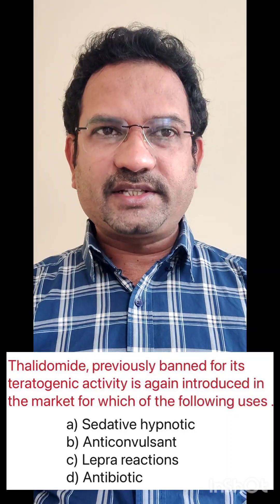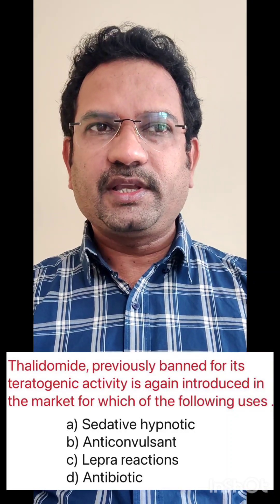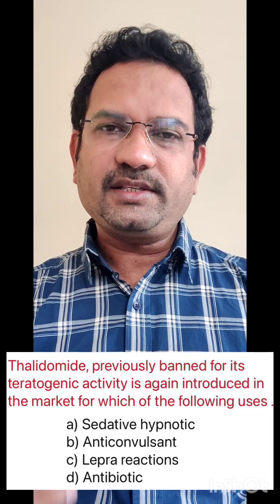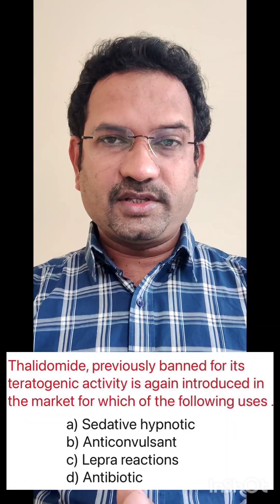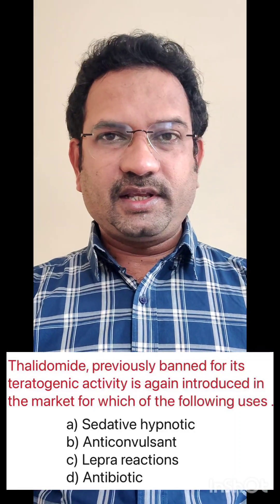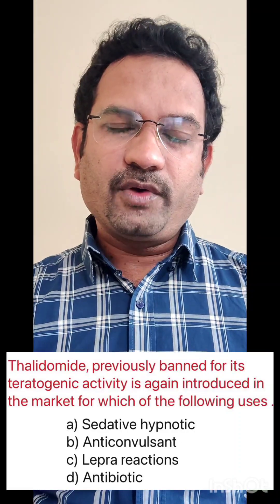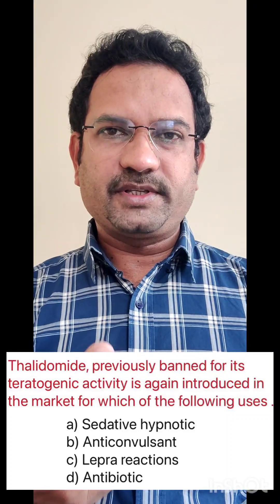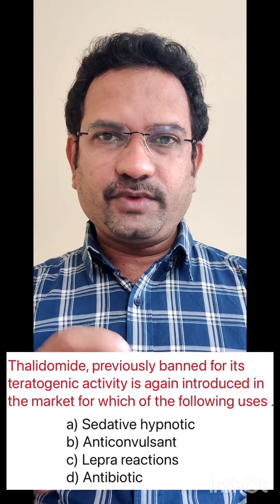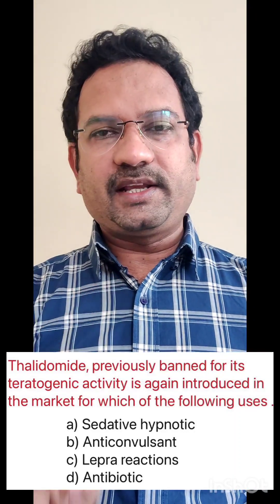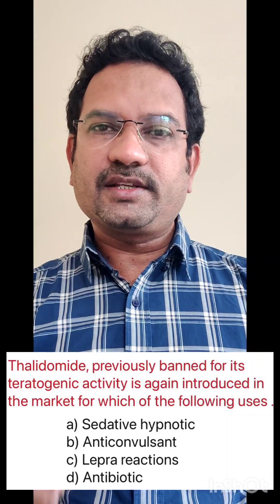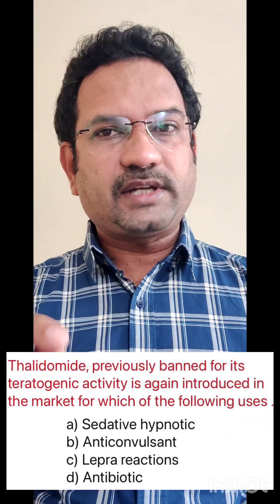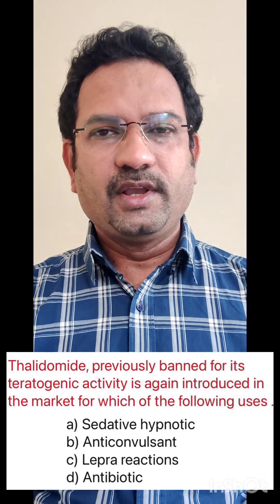Next question: thalidomide, previously banned for its teratogenic activity, is again introduced in the market for which of the following use? Options: sedative hypnotic, anti-convulsant, lepromatous reactions, or antibiotics. Thalidomide caused the greatest medical disaster, resulting in phocomelia and amelia — conditions where children were born without limbs or with partial limbs. Thalidomide has been reintroduced for two major purposes: to treat multiple myeloma, a cancer affecting plasma cells, and to treat lepromatous reactions. The answer is option C, lepromatous reactions. Its earlier sedative hypnotic use was what caused the teratogenic activity for which it was banned.